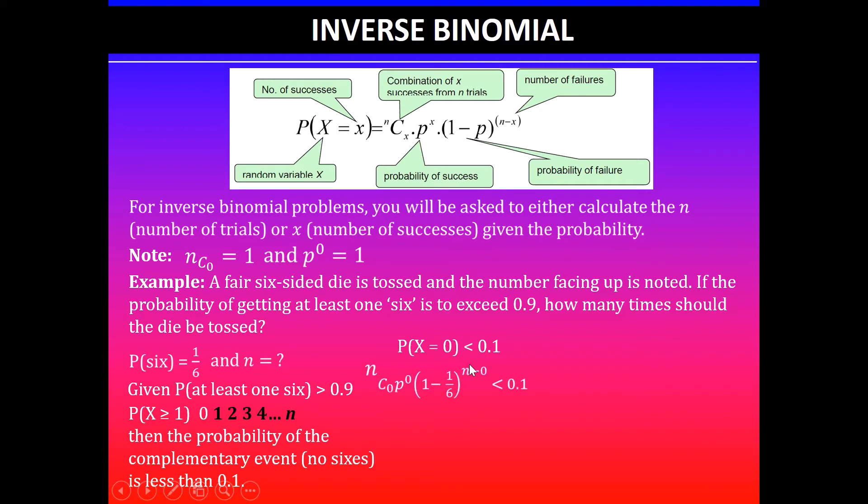So substituting this in the binomial equation, we get n is what we want to find, n combination 0 because our x value is 0, and p raised to the power of 0 (p to the power of x, x is 0) times 1 minus 1/6 (1 minus p) raised to the power n minus x, and x is 0.